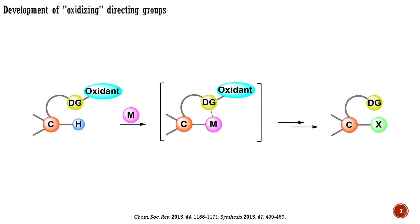A promising direction in C-H functionalization is based on the use of so-called oxidizing directing groups. Many C-H transformations, in addition to the catalyst, require stoichiometric quantities of an oxidant. The most effective oxidants for C-H activation have proven to be salts of silver(I) and copper(II). However, these salts are quite toxic and expensive. Therefore, finding less toxic and inexpensive oxidants is an ongoing task. An interesting solution was recently developed, based on the application of directing groups possessing functionality that can act as an oxidant for the catalyst.